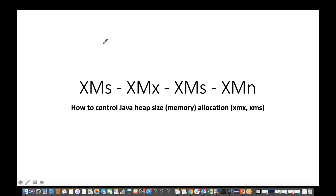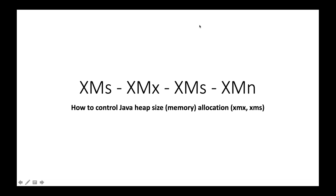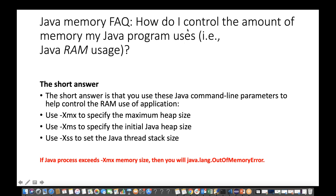So make sure you know what is the heap size, how to declare the heap size, can you configure it in Eclipse, and what do you mean by these terms — people might ask you at the time of interview. The question is: how do I control the amount of memory used by Java, which is used by the JVM in the form of RAM? The short answer is that you use Java command line parameters to help control the RAM use of your application.